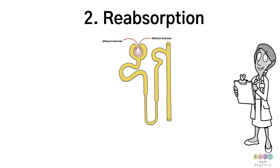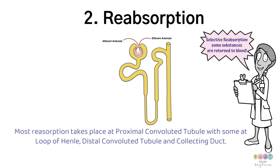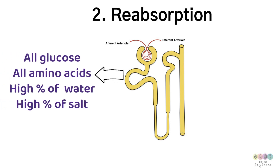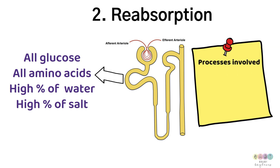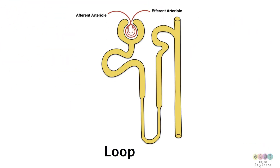Step two in urine formation is reabsorption, often referred to as selective reabsorption, because a lot of good non-waste material was filtered and now needs to be returned to the blood. Most reabsorption takes place at the proximal convoluted tubule, with some at the loop of Henle, the distal convoluted tubule, and the collecting duct. At the proximal convoluted tubule, all glucose, all amino acids, a high percentage of water, and a high percentage of salt are reabsorbed. The processes involved are mostly active transport and diffusion, with water reabsorbed by osmosis.